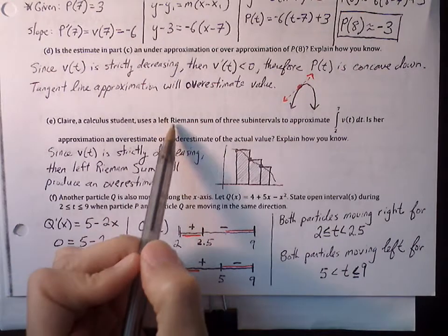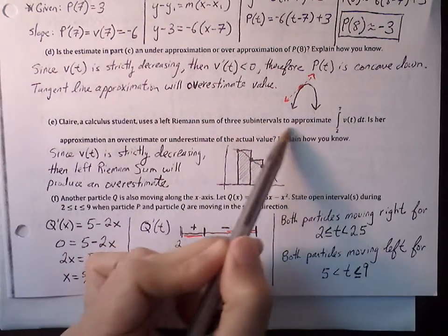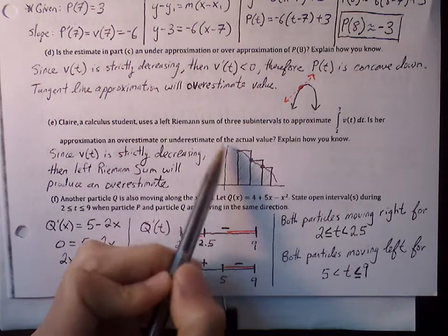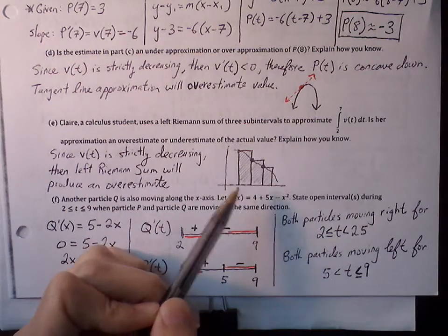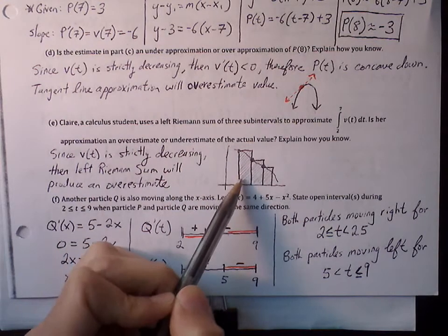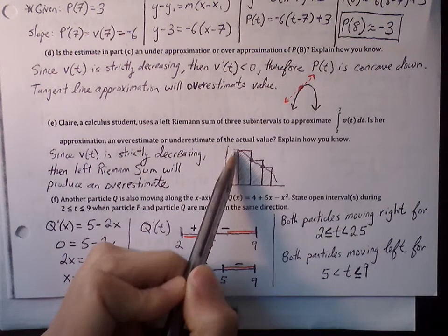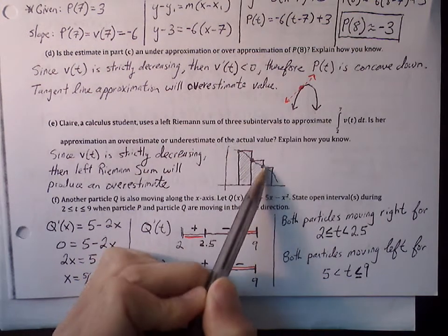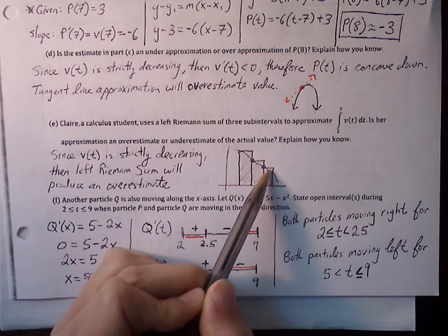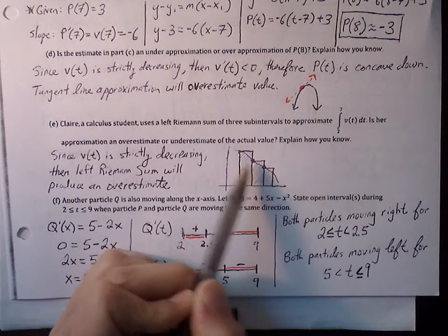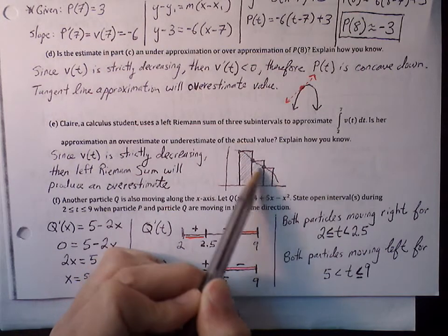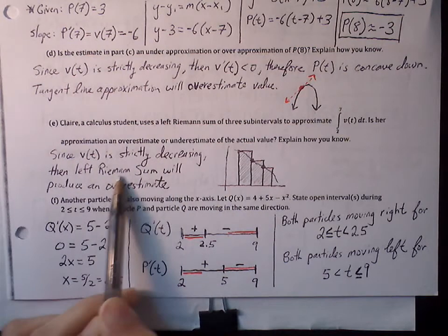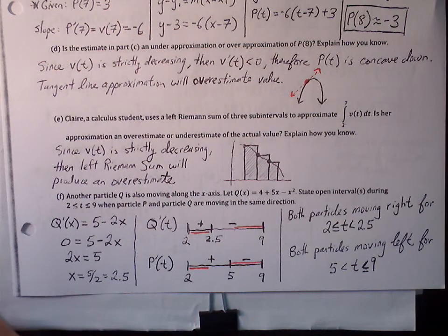Part E: Claire uses a left Riemann sum of three subintervals to approximate the definite integral from 2 to 7 of v of t. We have a decreasing function — is this approximation under or over? Visualizing by graphing: with a left Riemann sum, the upper left corner of each rectangle touches the graph, so the rectangles stick above the curve. The area of these rectangles is higher than the actual area under the curve. Since velocity is strictly decreasing, the left Riemann sum produces an overestimation.